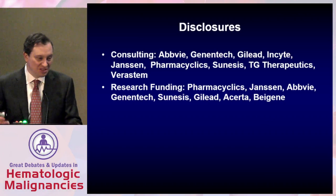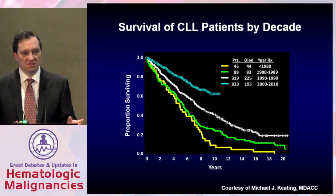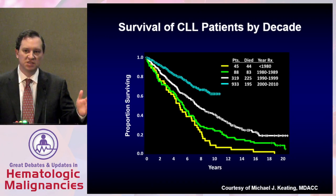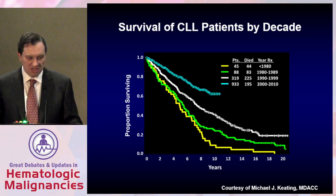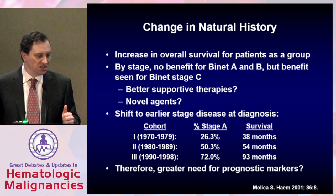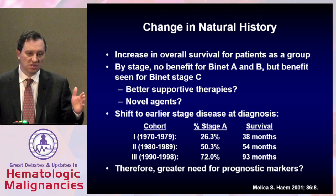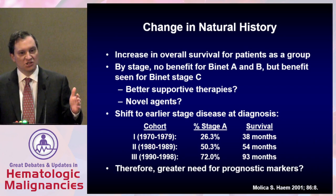Thank you for having me back. This is a very interesting and important topic and I think it's going to create a great deal of confusion down the road. What I really want to talk about is the idea of lead time bias. Here we have data from MD Anderson showing improvement in survival for CLL patients over the decades, but when you look at these patients stage for stage, the improvement in survival is almost completely due to earlier diagnosis. In the 1970s, 26.3% of patients were diagnosed as stage A, whereas in the 1990s it was up to 72%.